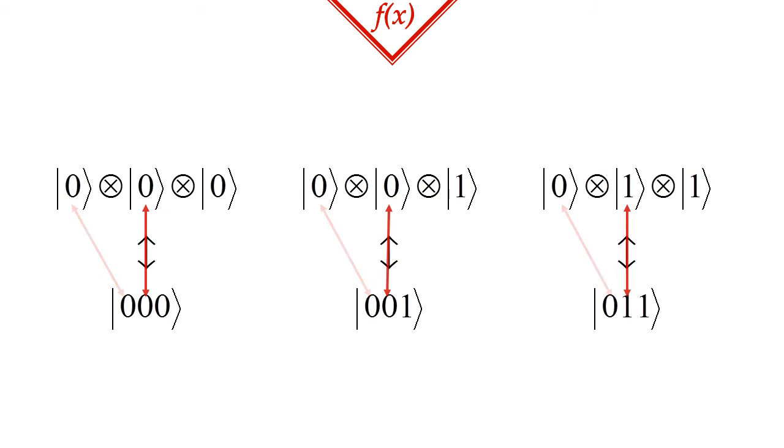Since the tensor product is a non-commutative ordered pair, there can be no confusion over which state is from which space. The first bit value is always associated with the first qubit, the second with the second qubit, and so on and so forth.